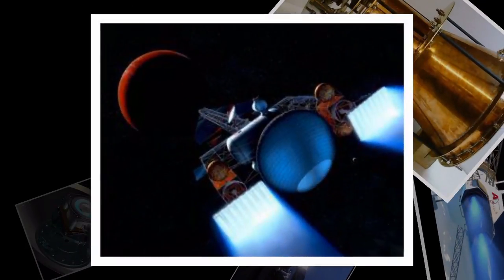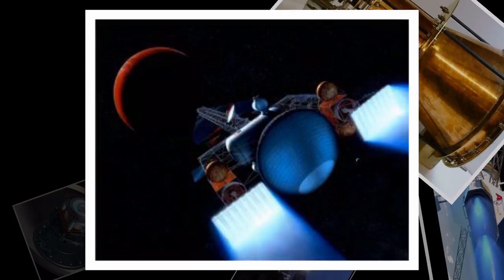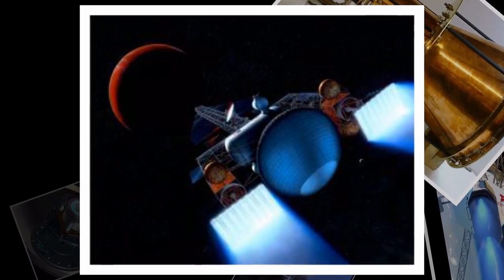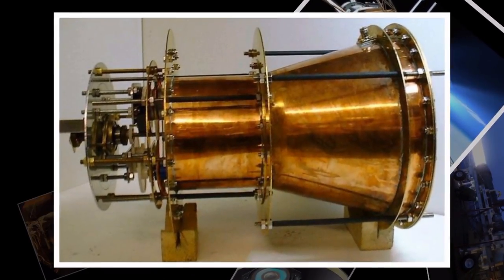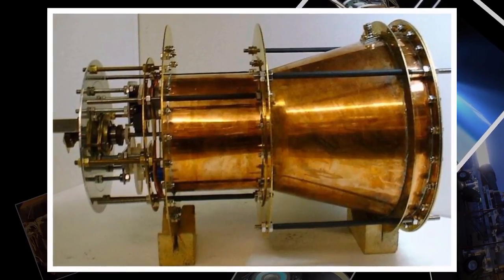A chemical rocket tops out at around 5 kilometers per second (1.86 miles per second), while a hall thruster can reach speeds of up to 40 kilometers per second (25 miles per second).